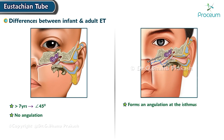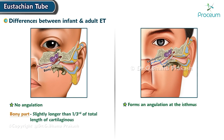In infants, the bony part is slightly longer than one-third of the total length and is wider. In adults, the bony part is one-third and the cartilaginous part is two-thirds of the total length.